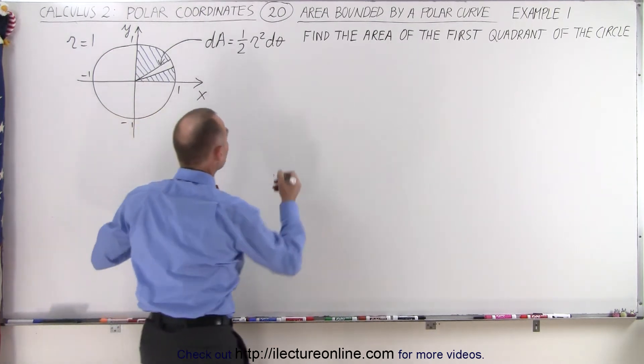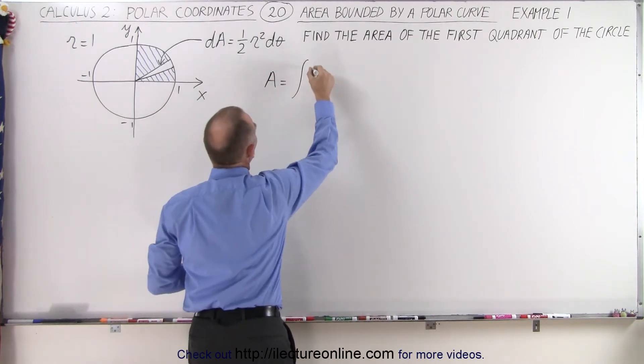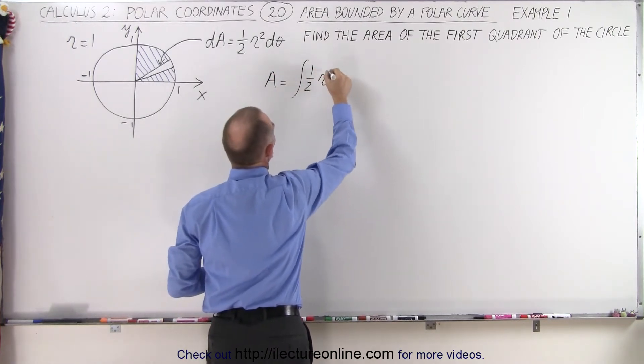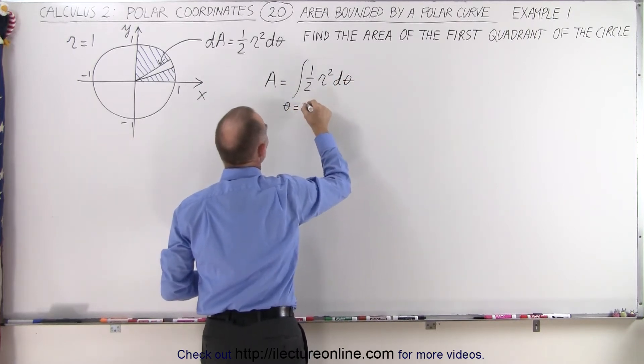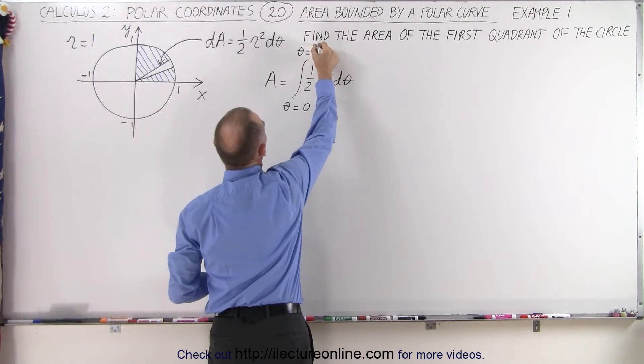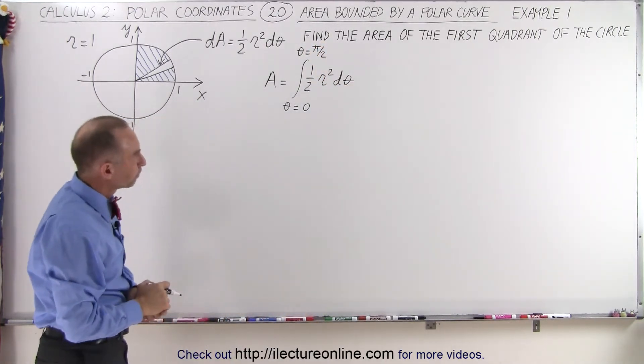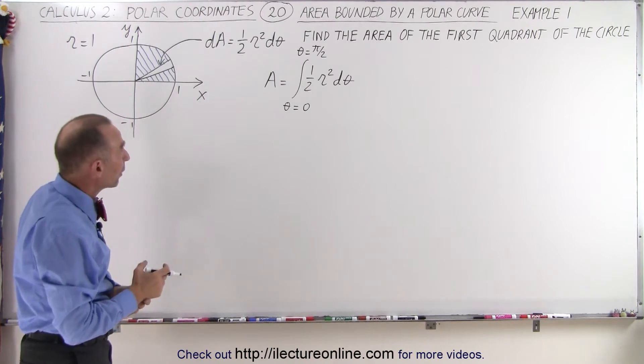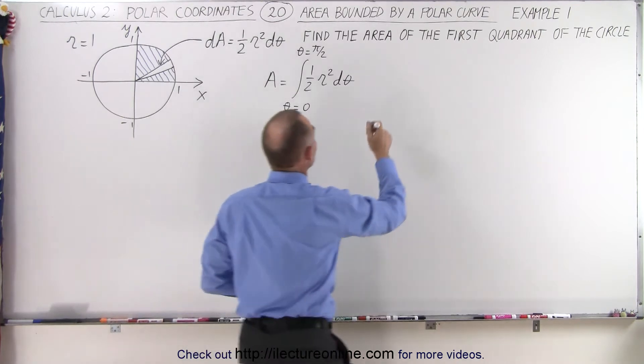So the area of that first quadrant will be equal to the integral of one-half r² dθ from θ = 0 to θ = π/2. Now in this case, what we want to do is replace r by what that r is equal to in terms of the function of theta.